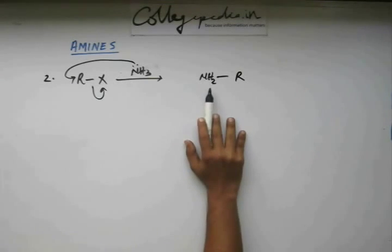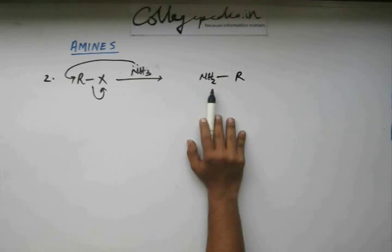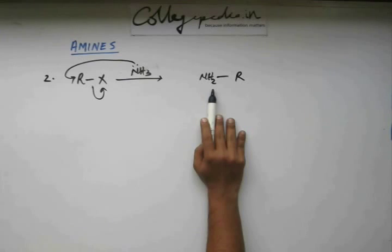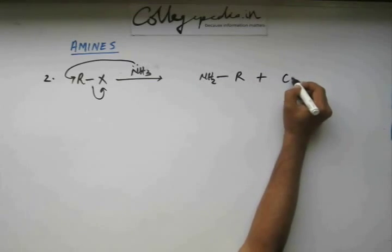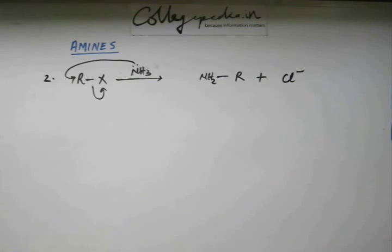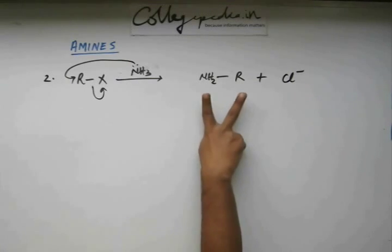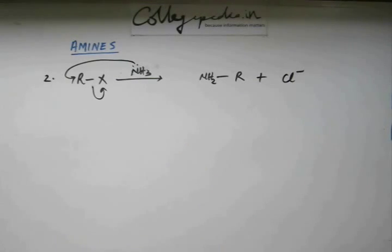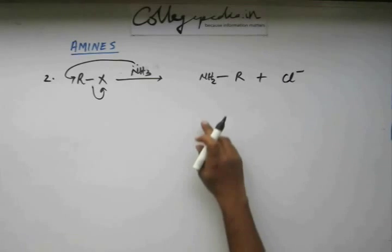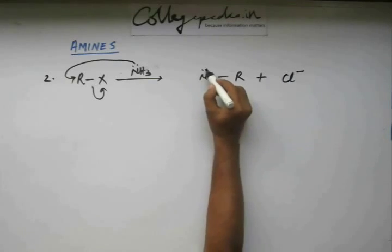Nitrogen will gain a positive charge and then remove one hydrogen (H+) to get rid of that plus charge. So one nitrogen will be reduced from ammonia — I have shown NH2. The chlorine comes out as Cl minus, and we get a primary (one degree) amine.